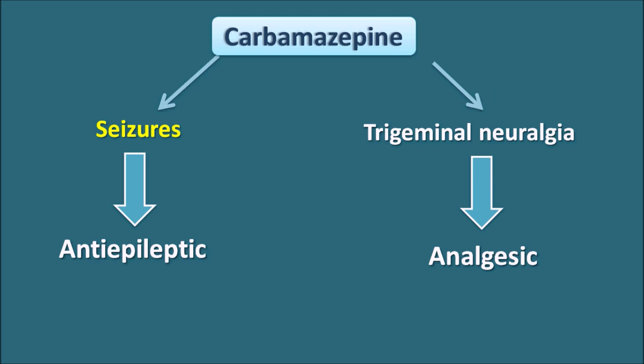However, carbamazepine is not a conventional analgesic used to treat body pains and muscle pains. It is particularly used in trigeminal neuralgia, where pain is produced because of a disorder within the neuron that triggers nociception. In such situations, carbamazepine can be used to treat neuronal pain.